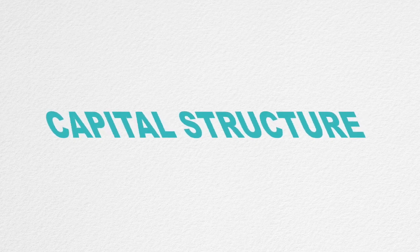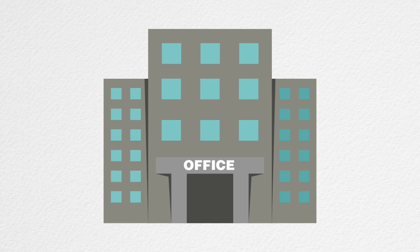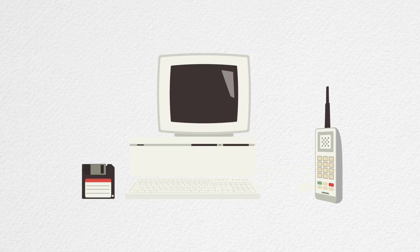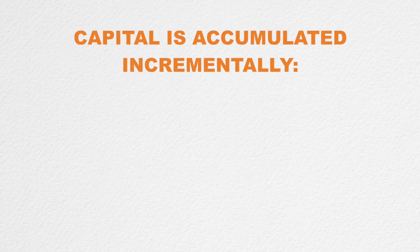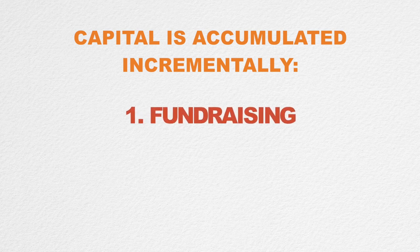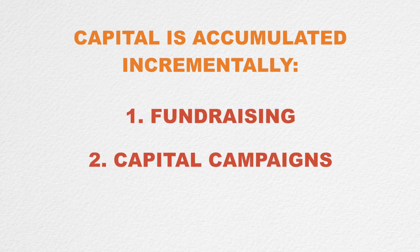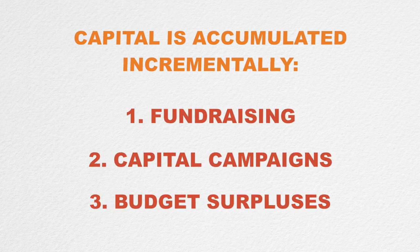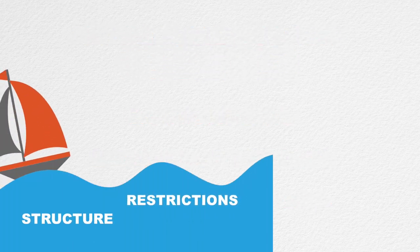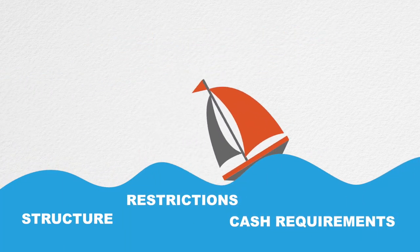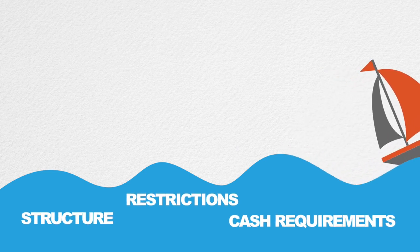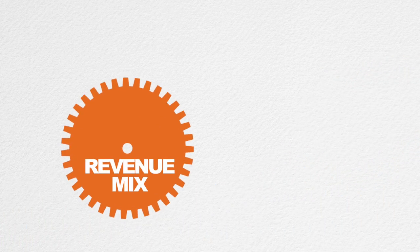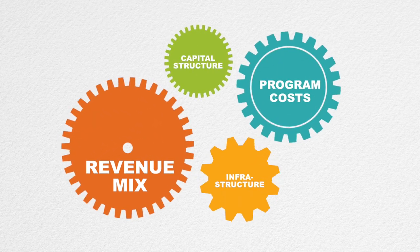Finally, there's capital structure. What kind of assets does your nonprofit have to be effective? Do you have or need a building? How about cash reserves? Is your technology ancient? Do you have or need an endowment? At nonprofits, capital is often accumulated incrementally through fundraising, capital campaigns for buildings and endowments, and budget surpluses in good years. The structure, restrictions, and cash requirements of your capital have a big impact on financial flexibility and cash flow.